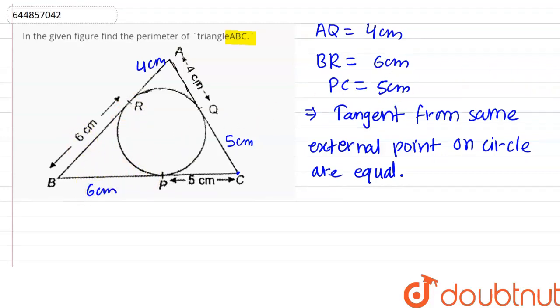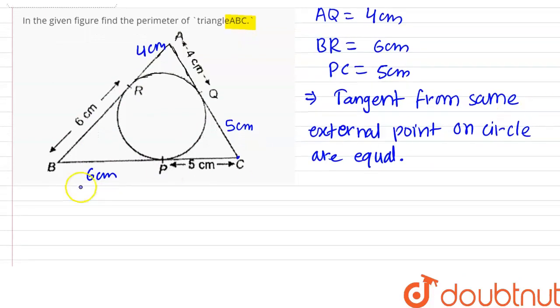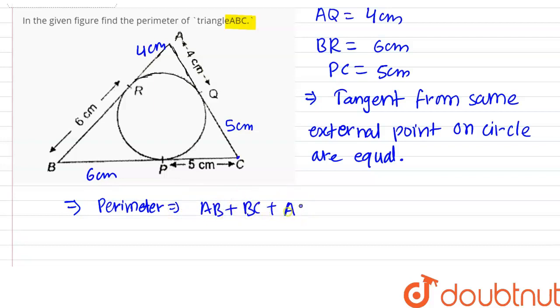And now we have to find this perimeter, so for perimeter, we have to sum up all sides equals AB plus BC plus AC.